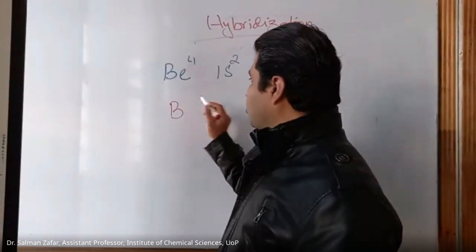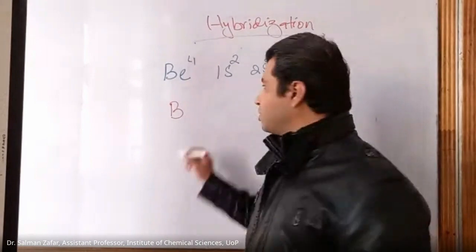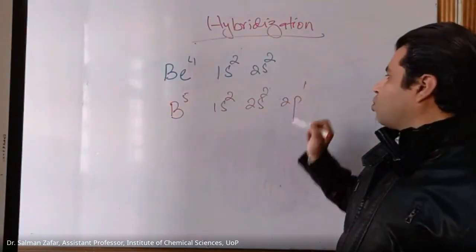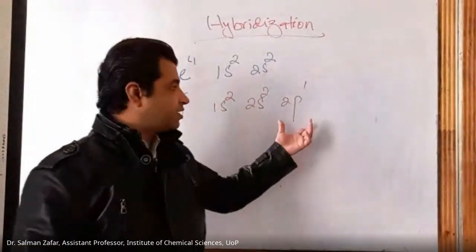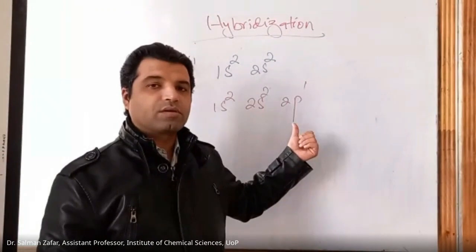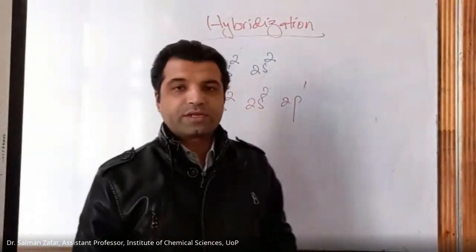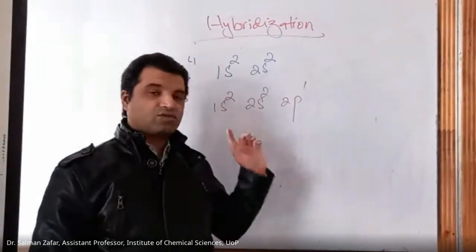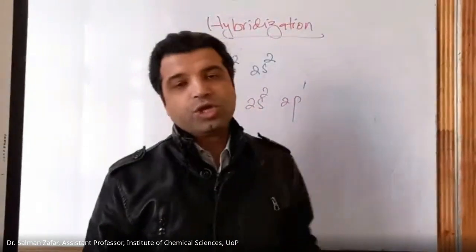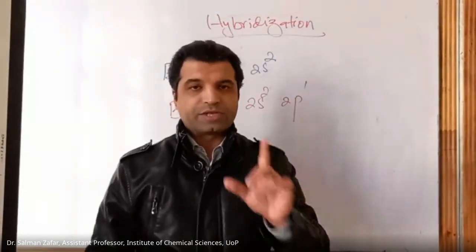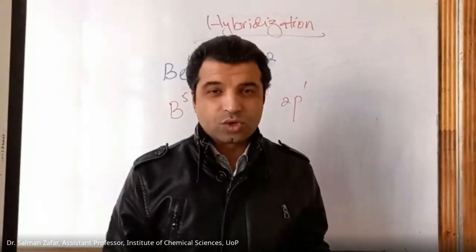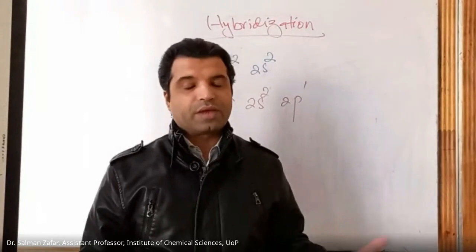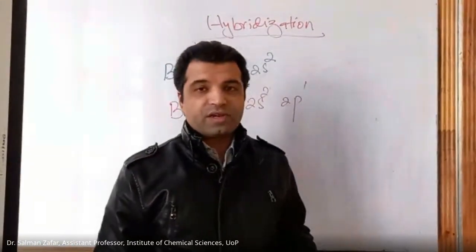The next example is boron. Boron belongs to the third group; its atomic number is 5, and its electronic configuration is 1s² 2s² 2p¹. It has 5 electrons. The 1s and 2s orbitals are completely filled, so those 4 electrons are paired up, and only 1 electron is unpaired. You would think boron forms only 1 bond and is monovalent, but actually it belongs to the third group and elements in that group — boron, aluminum, and others — are trivalent; they form 3 bonds.